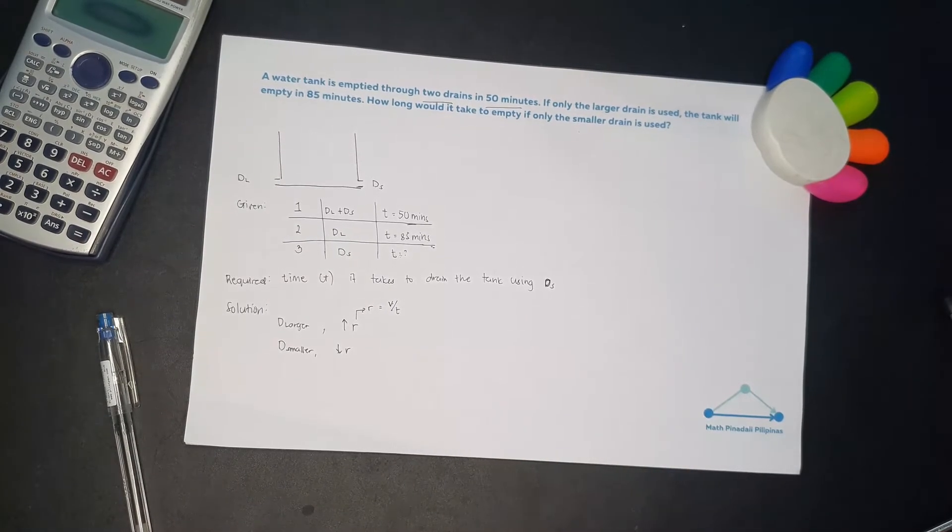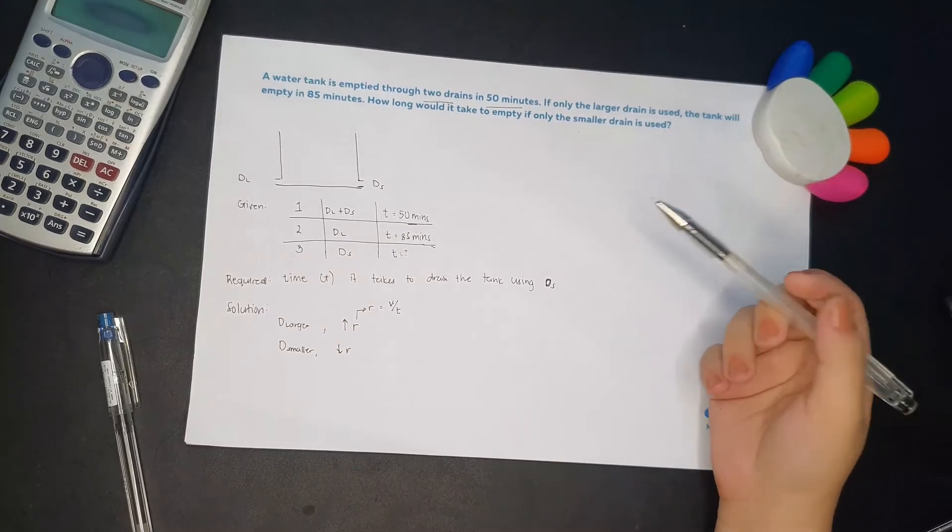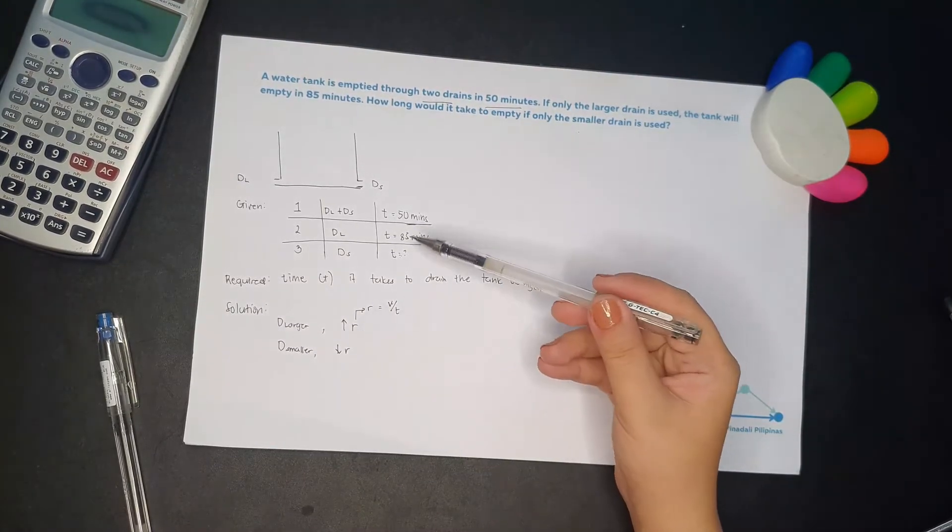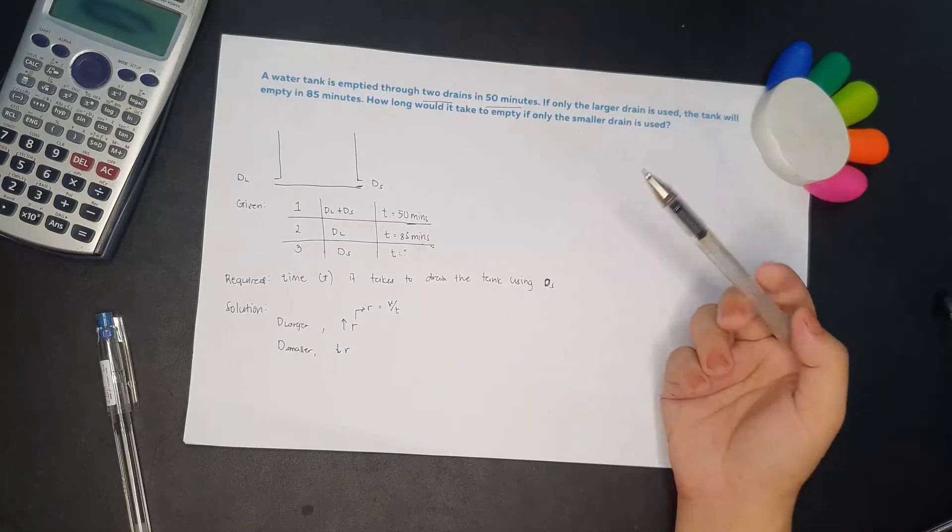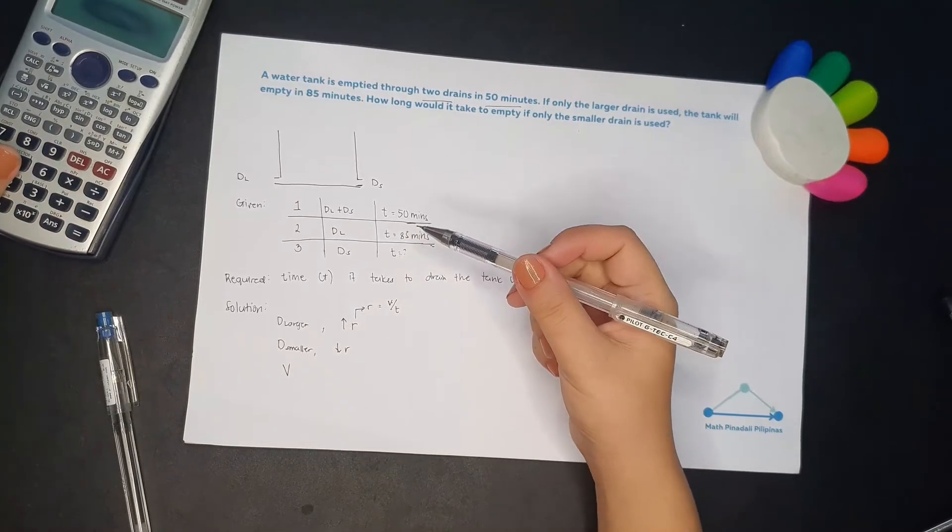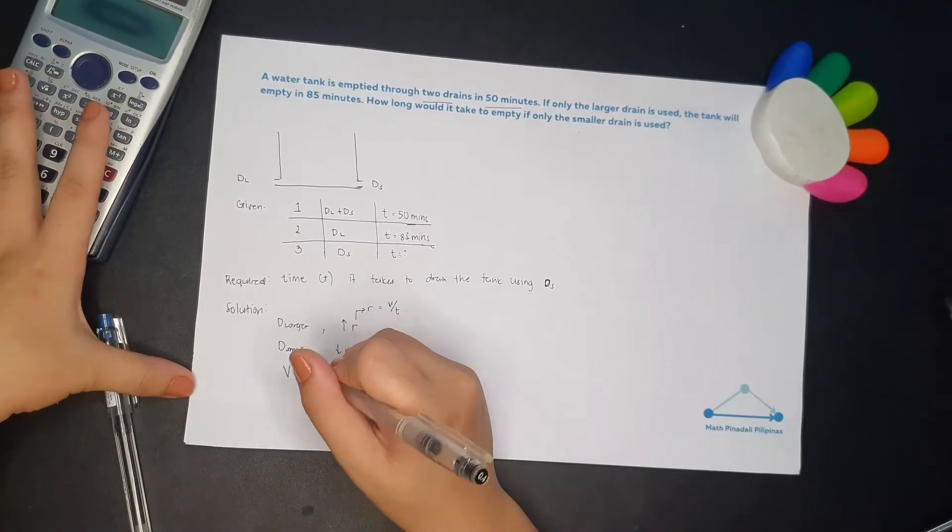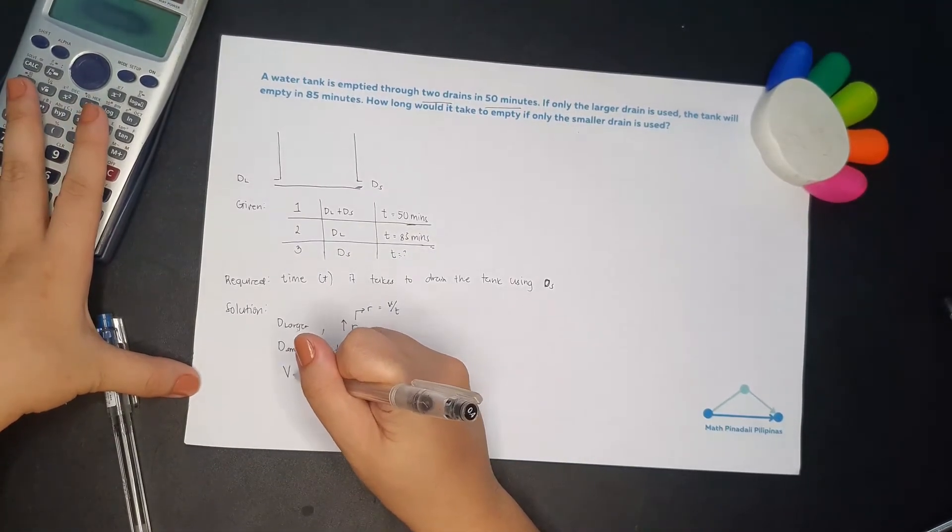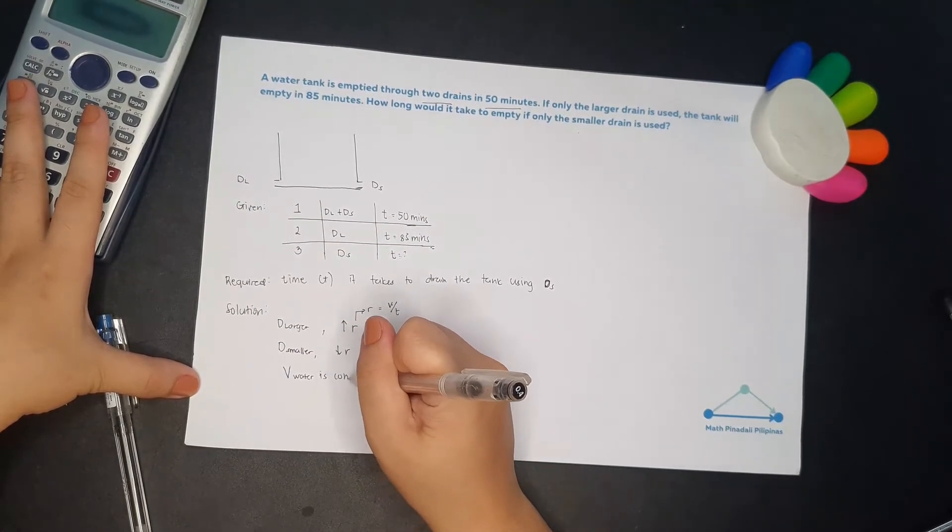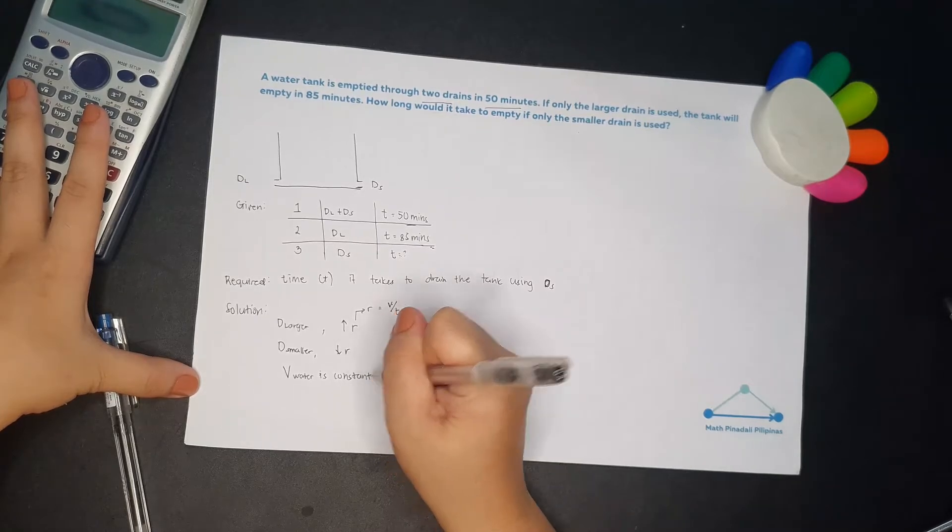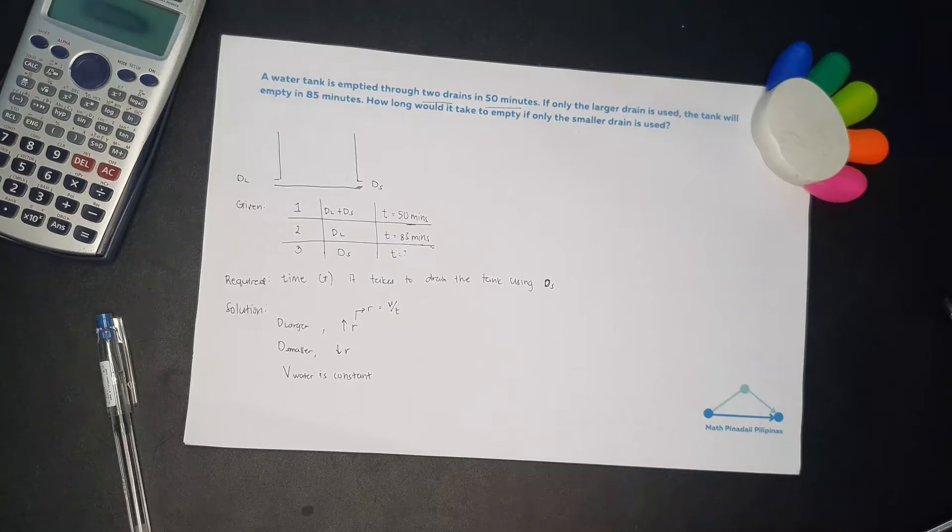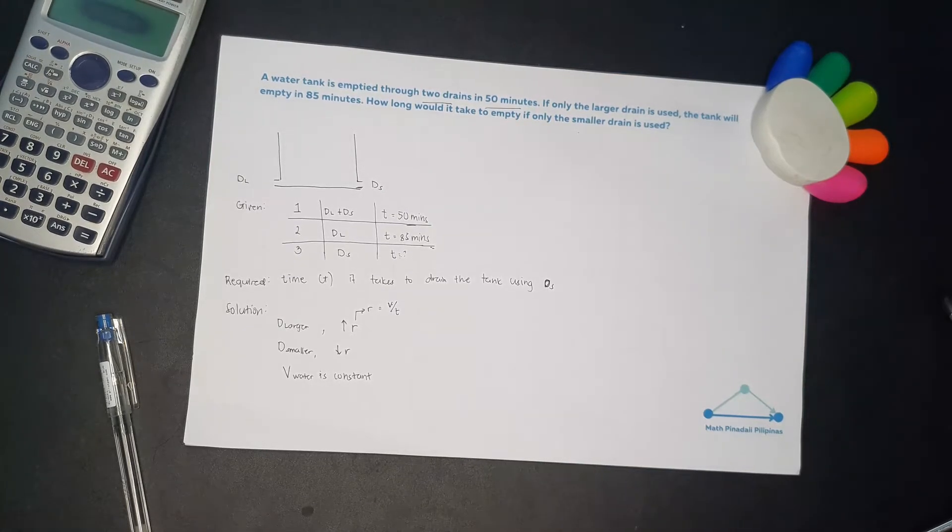And then, ano ba yung constant dito? Kasi meron tayong dalawang, meron tayong rate, meron tayong time binibigay. And then, ano ba yung constant? So yung volume ng tubig sa tank, ayan yung constant. So volume of water is constant. Ngayon, hanap tayo ng mga relationship between this giving.